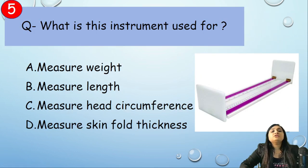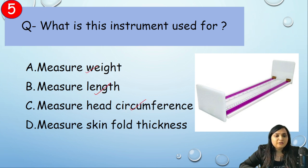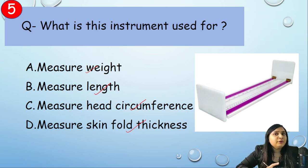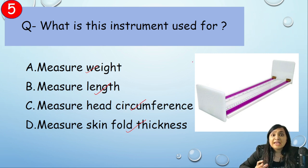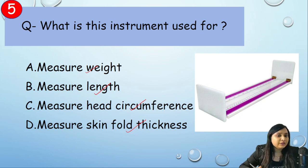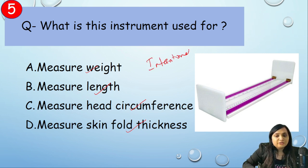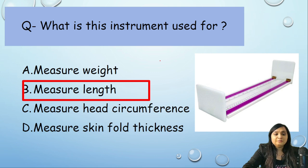The next question asks what instrument is shown. Options are: measure weight, measure length, measure head circumference, or measurement of skinfold thickness. This is called photographic or pictorial memory — you need to remember images for exam questions. This instrument is called the infantometer, which is used to measure the length of a child who is less than 2 years of age. Correct answer: option B, measure length.